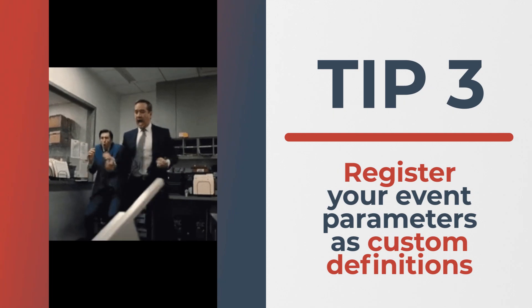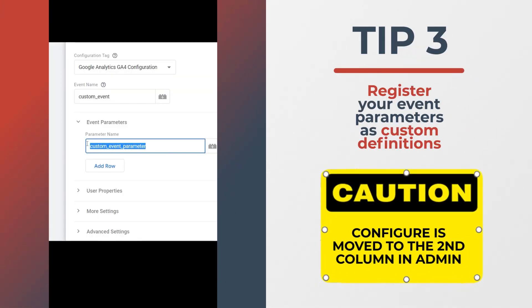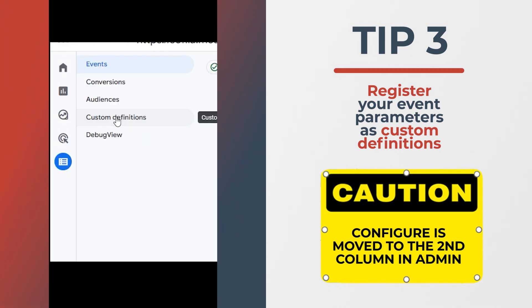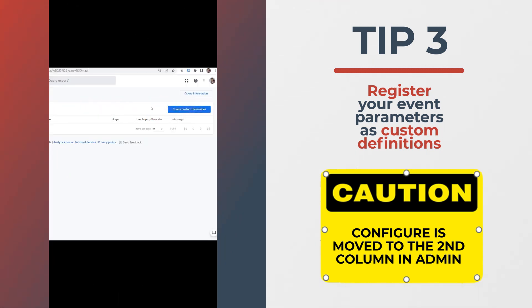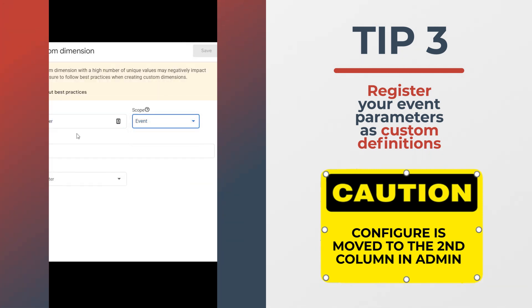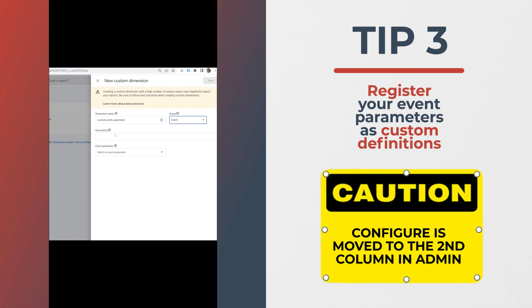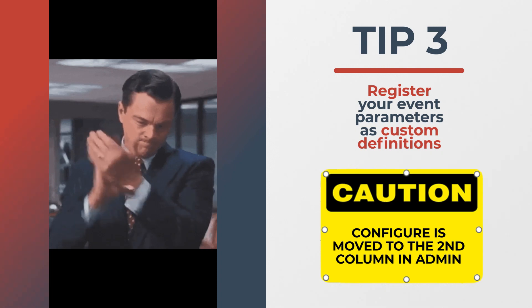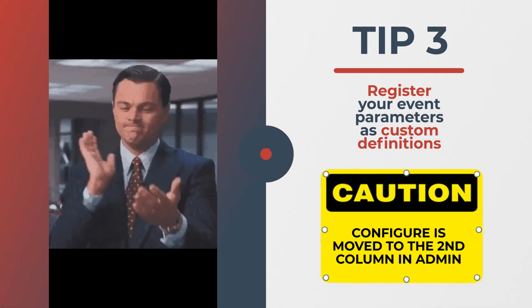So you set up your GA4 event but cannot access the event parameters in the tool? You have to register it as a custom definition. Copy your event parameter name, navigate to GA4, and click Configure Custom Definitions. This is where you can create custom dimensions. Click Create Custom Dimensions, provide a dimension name, set the scope to event, add a description, and paste your event parameter exactly as it appears in GTM. Click Save — your custom definition is now registered and should be available within your reports.